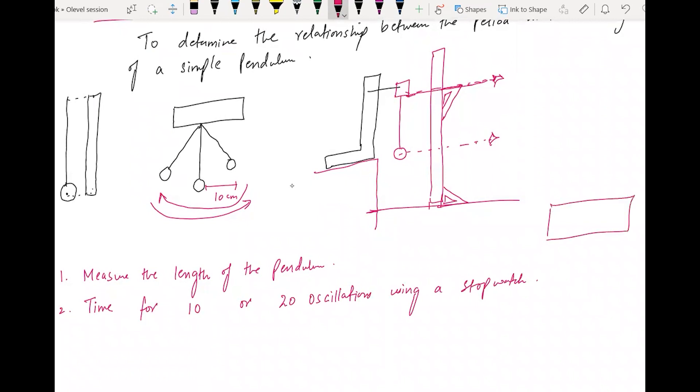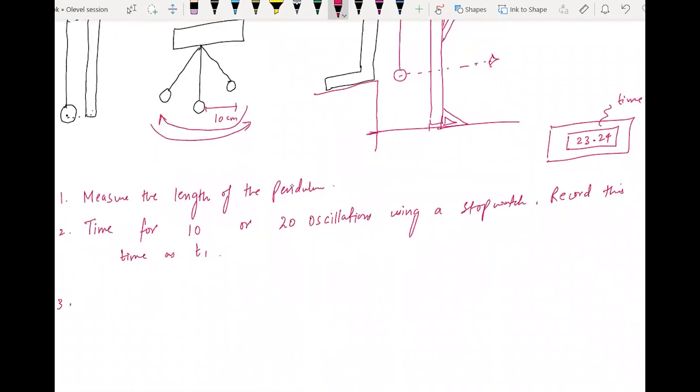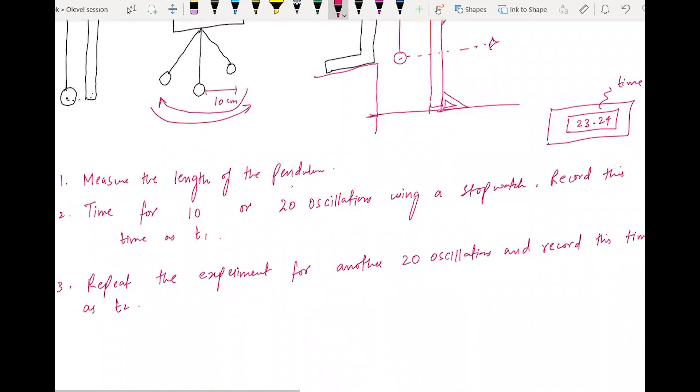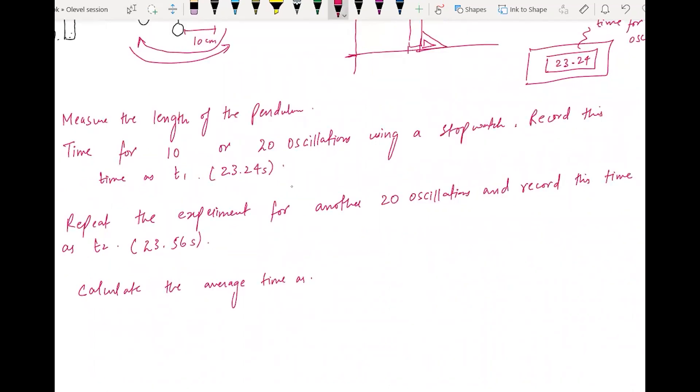You will have a digital stopwatch. For example, you will record this time as T1. You will repeat this experiment for another 20 oscillations.